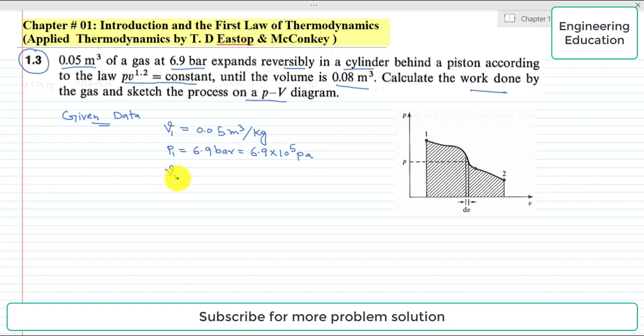Then volume V2 is given, which is 0.08 cubic meter, but as we discussed we will take unit mass of the gas, so it will become 0.08 cubic meter per kilogram. And the law of expansion is PV^1.2 equals C constant.